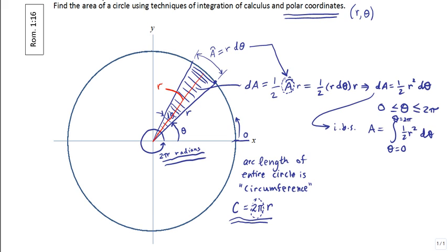The one half and the r squared terms are all constants. As a result, I can pull all of that out of my integration, and so we get that A, the area, is equal to one half r squared, the integral going between zero and two pi, of d theta.